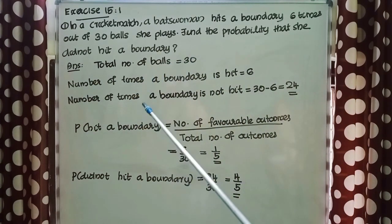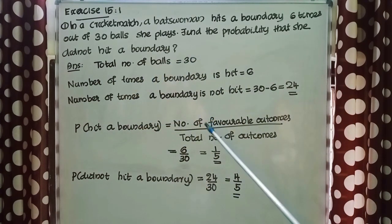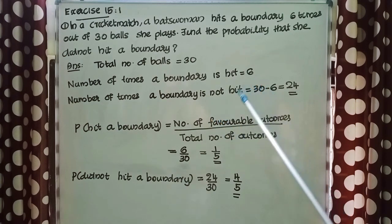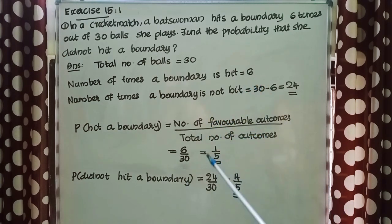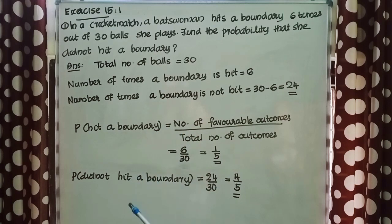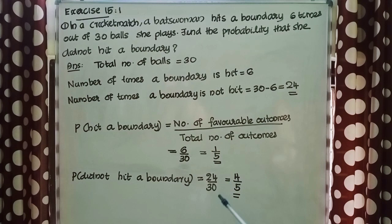Probability of hitting a boundary = number of favorable outcomes / total number of outcomes = 6/30 = 1/5. Probability of not hitting a boundary = 24/30 = 4/5.